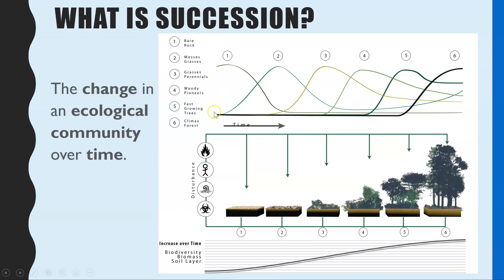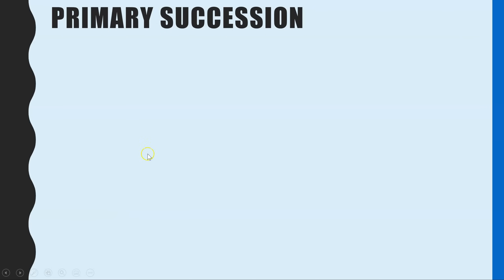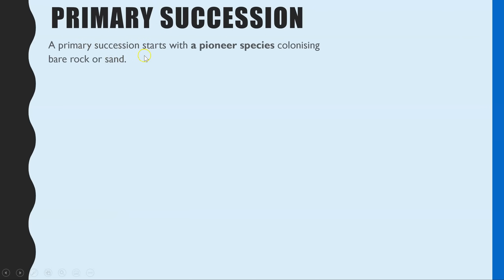What causes these changes over time is called a primary succession. This is when you start off with bare rock and it becomes a climax community with a forest over time. The bare rock might be created by new land from an earthquake or a volcanic eruption.